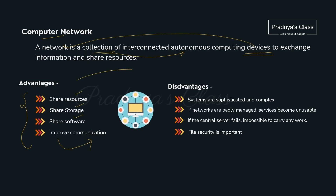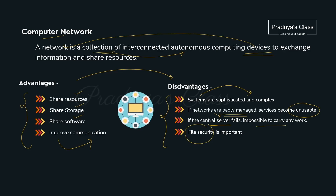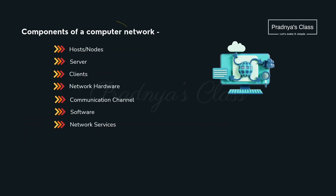Are there any disadvantages regarding networks? Yes — the system in the network should be sophisticated and complex. If it is not managed properly, the services become unusable. In case of client-server design, if the server fails, we cannot carry out any work. File security is also important over the network. Proceeding to the next topic: components of the computer network.